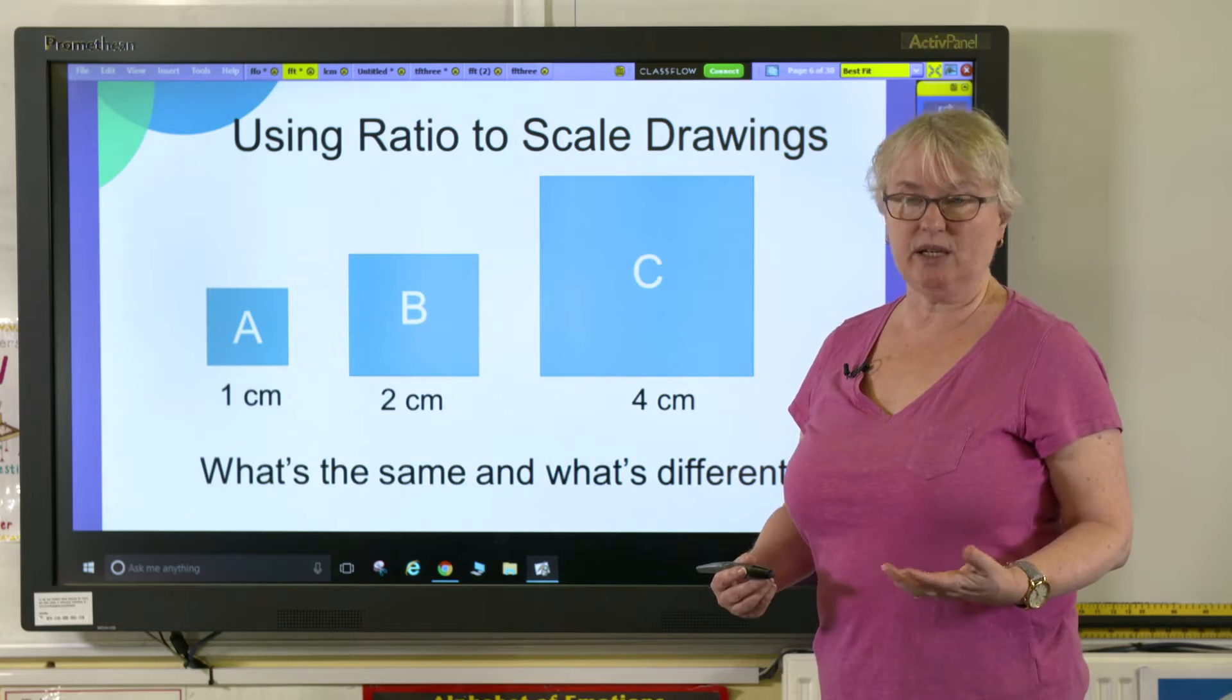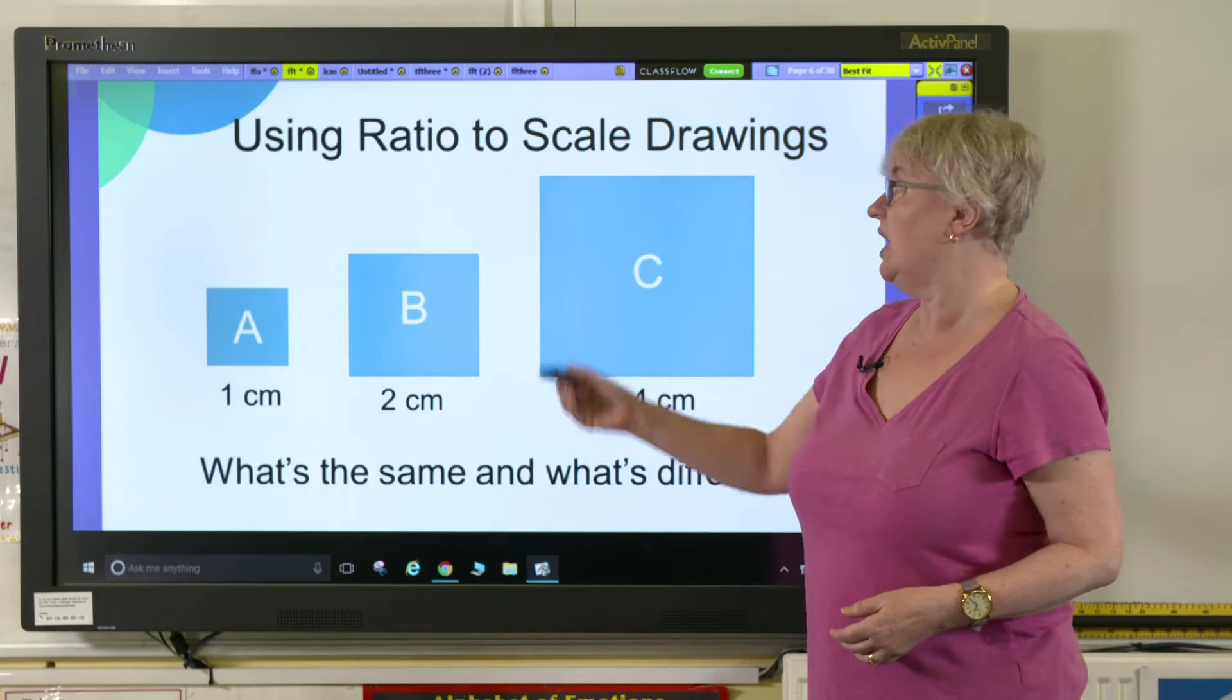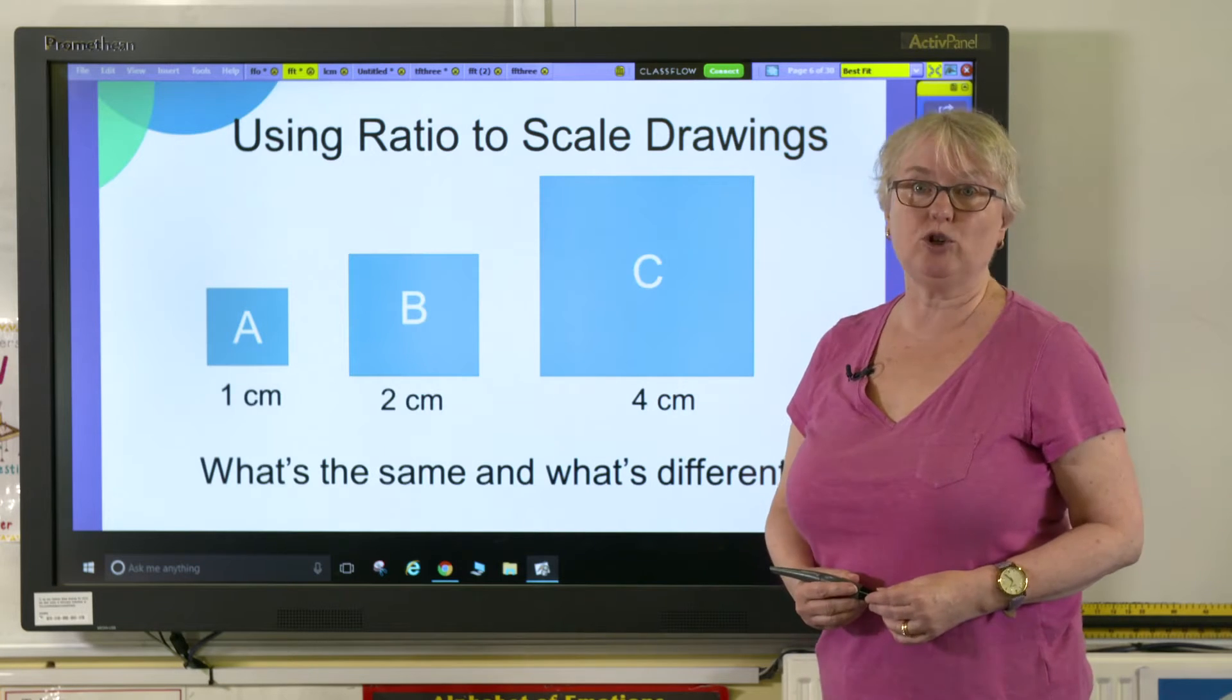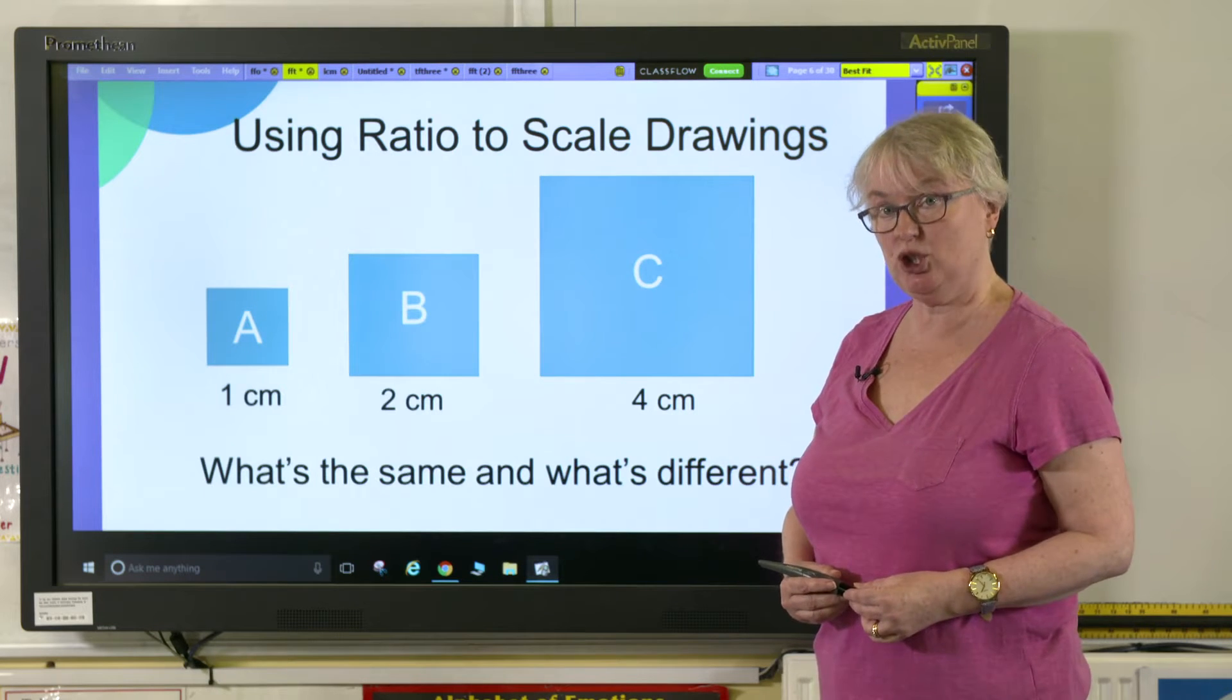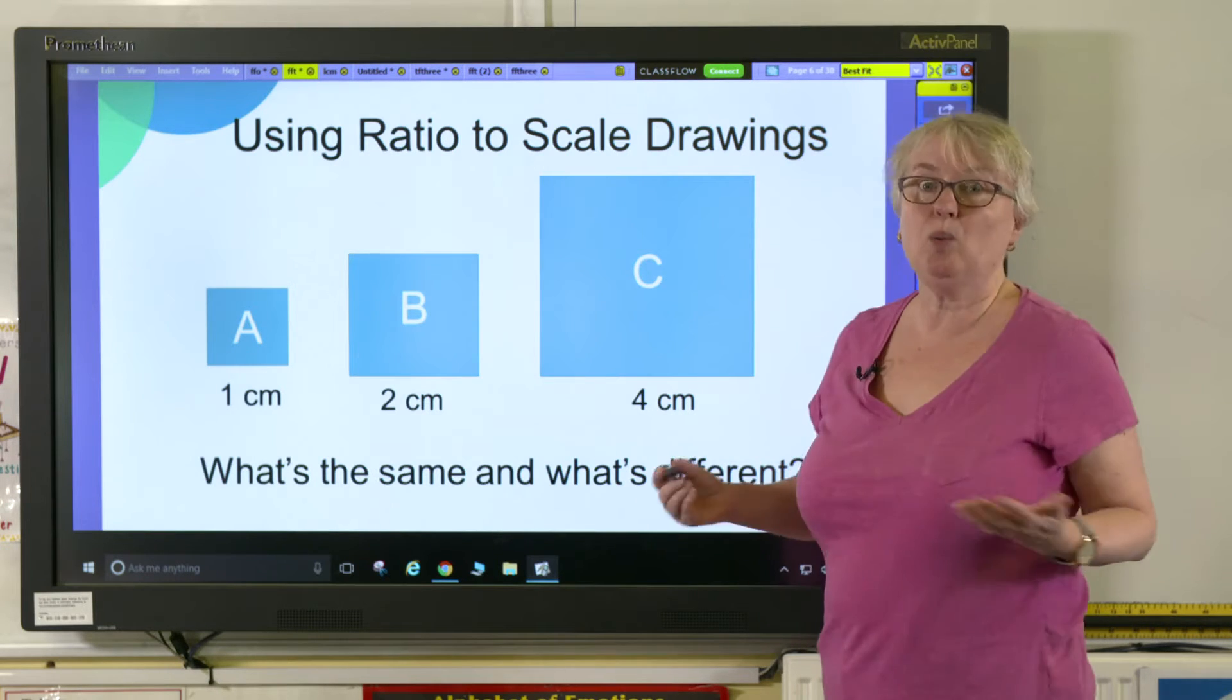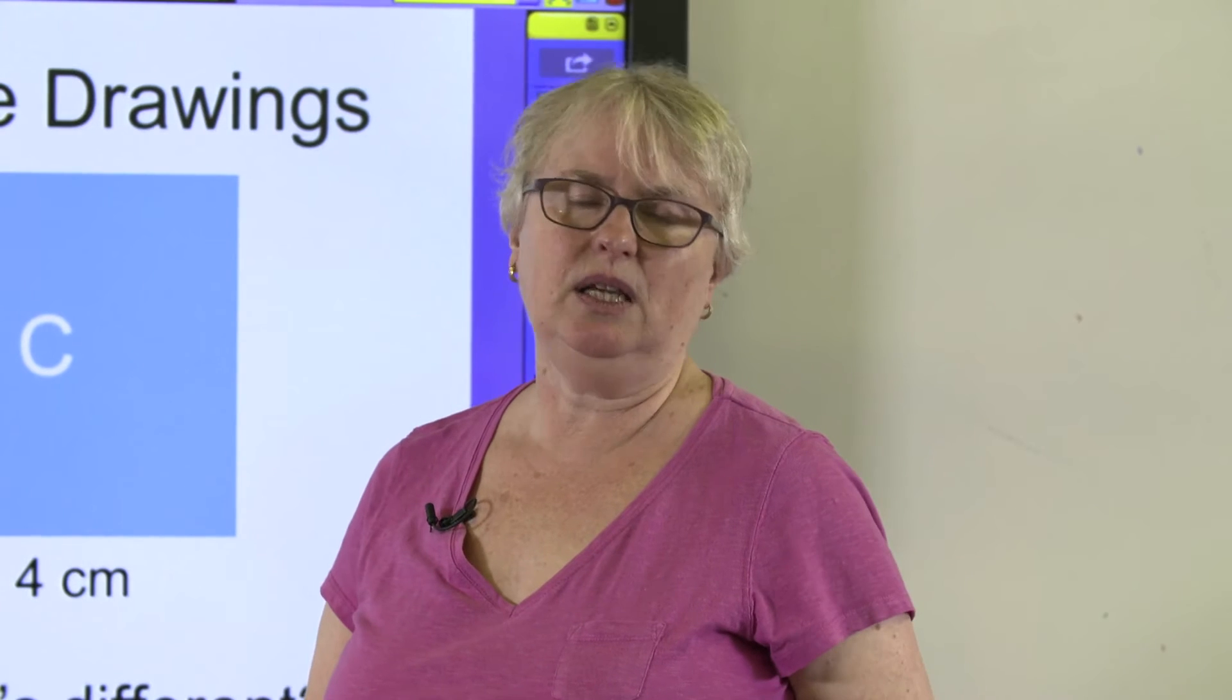Well, the way I'd start is by showing the children a diagram like this where I've got three shapes A, B and C and ask the children the key question: what's the same and what's different? And I'd give children a minute or two with their learning partner to have a look and to discuss this.